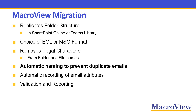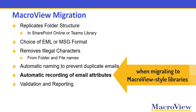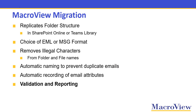It also automatically names the resulting emails in SharePoint Online or Teams in order to prevent duplicates — copies of any one email in any SharePoint area. MacroView Migration automatically records the attributes of the email as metadata in the destination SharePoint environment, providing the relevant content type and metadata columns are present, which they will be if you create or update the library using MacroView provisioning.